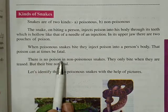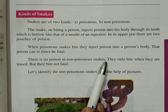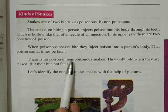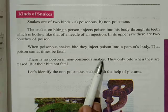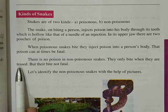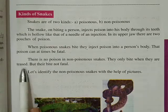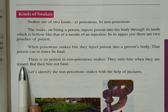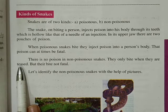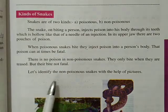There is no poison in a non-poisonous snake. Jo aise saap hain jind mein zeher nahin hota, non-poisonous kehlate hain. They only bite when they are teased — woh kisi ko kaate bas tab jab unhe pareshan kiya jata hai. But their bites are not fatal — magar uske kaatne se koi vyakti marta nahin hai.